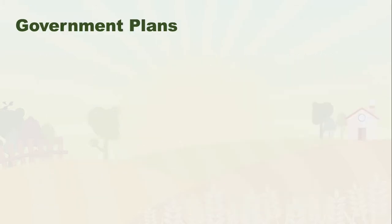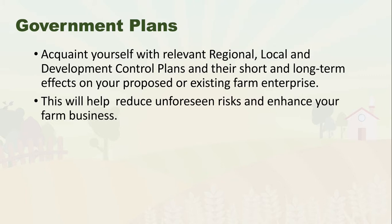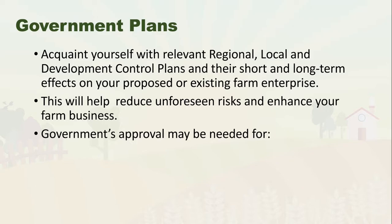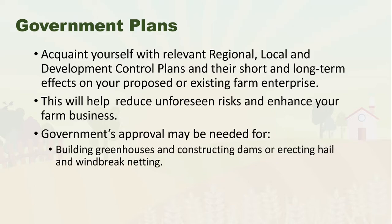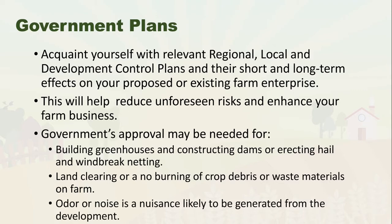Next, government plans. Before we establish buildings on our garden, we should get permits from the government. Acquaint yourself with relevant regional, local, and development control plans and their short and long-term effects on your proposed or existing farm enterprise. This will help reduce unforeseen risk and enhance your farm business. Government approval may be needed for building greenhouses, constructing dams, erecting gale and windbreak netting, land clearing, or burning crop debris, and for activities that generate odour or noise nuisance.